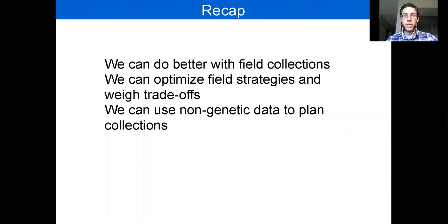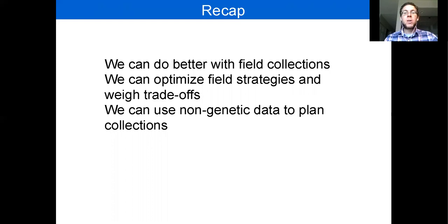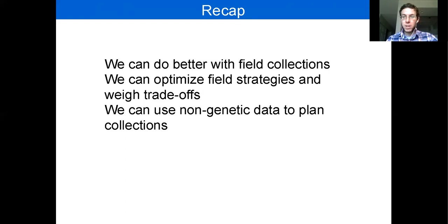To recap the second part of the talk: I showed that we can improve our field collections, specifically by visiting as many populations as possible, so more plant collection and exploration is needed by botanic gardens. We can determine rules of thumb that help allocate effort in the field, making our collections more efficient as well as effective. And we can explore tools that don't involve genetic data that can be applied to many plant species.